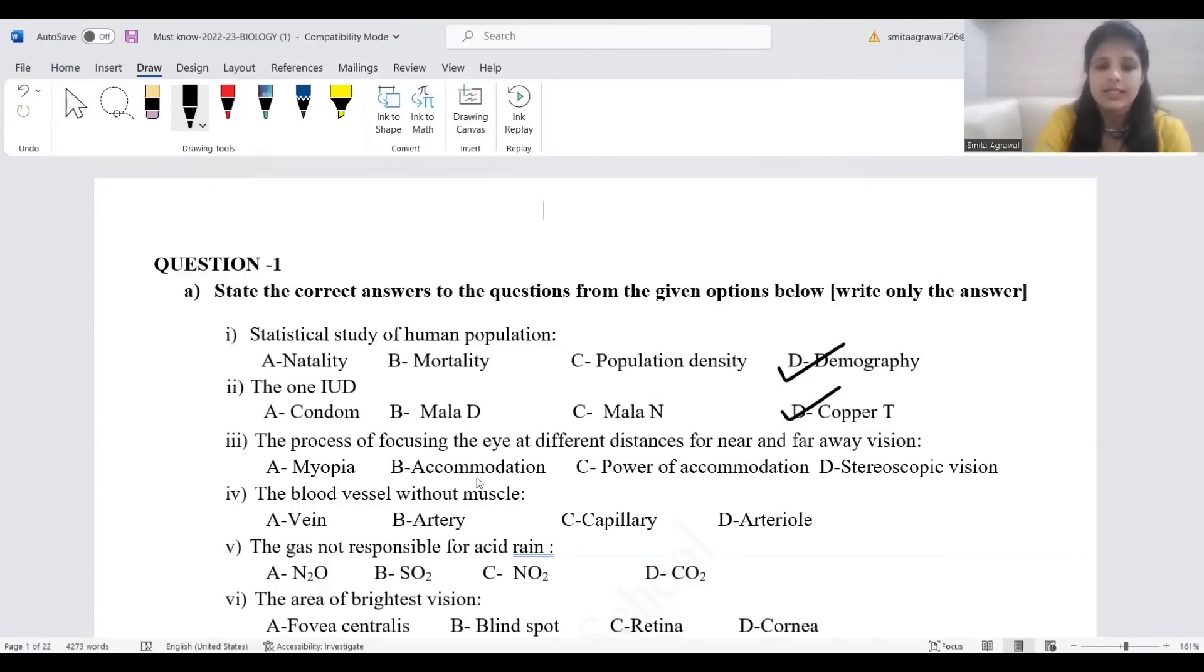The process of focusing the eye at different distances for near and far away vision. Here the correct answer is accommodation. You may get confused with the question option power of accommodation. Power of accommodation will be the answer when the question is the ability of eye to focus nearby and far off objects.